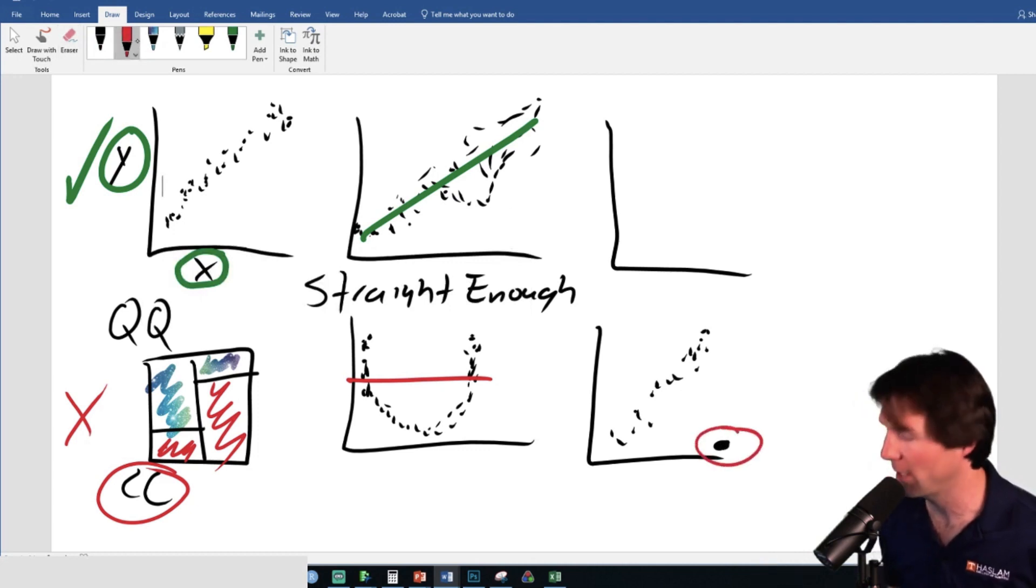You know what I'm going to do on the test? I'm probably going to circle that outlier and be like, oh my gosh, look at that outlier. That outlier is way out of control. So we got QQ, straight enough, no outliers. The reason I say no outliers is because I want to say we passed the condition of no outliers. To pass the condition of no outliers, there should be no outliers.